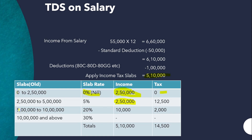For income between ₹5,00,000 and ₹10,00,000, the applicable slab rate is 20%. Since the income above ₹5,00,000 is ₹10,000, the tax is ₹2,000. So the total basic tax is ₹12,500 + ₹2,000 = ₹14,500 on a taxable income of ₹5,10,000.